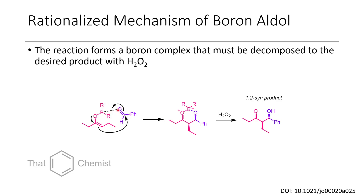The aldehyde is able to donate some of its electron density into the boron, and the electron density on the enolate oxygen can collapse into the enolate carbonyl alpha-carbon, allowing attack on the aldehyde. We form a cyclic boron-containing complex, which is very stable, so it's necessary to do an oxidative workup to get your product out. The workup is mild enough that no elimination of the hydroxy occurs and no oxidation of the hydroxy to the corresponding ketone occurs.